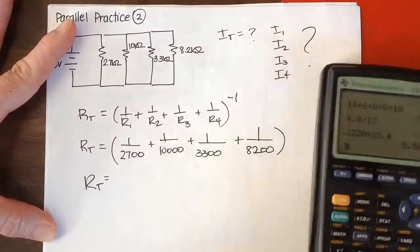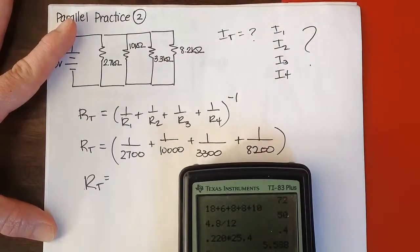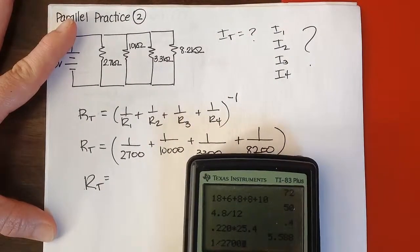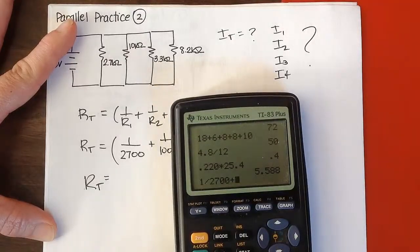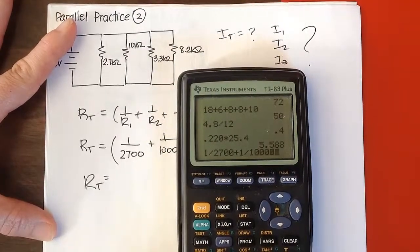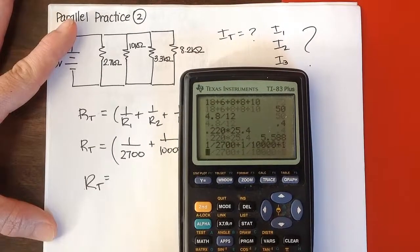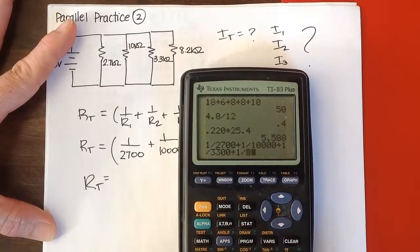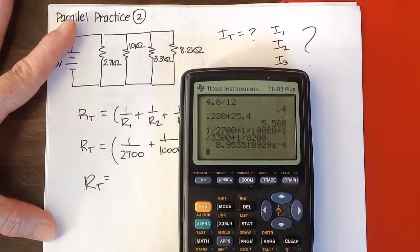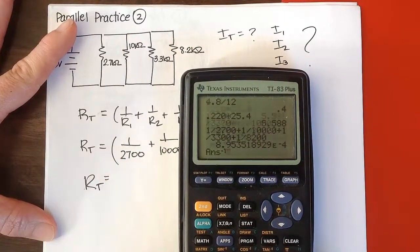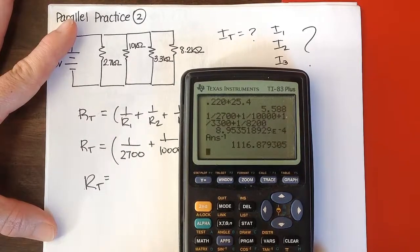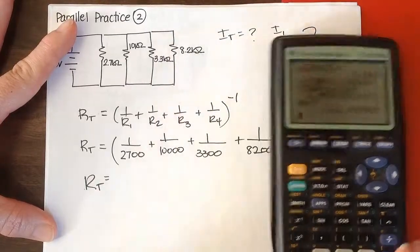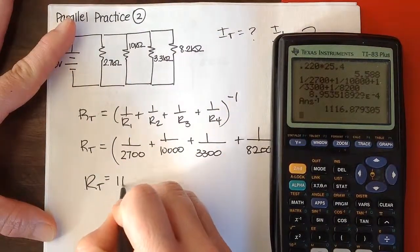So let's find the total resistance now. 1 divided by 2,700, plus 1 divided by 10,000, plus 1 divided by 3,300, plus 1 divided by 8,200, and then the inverse of that. I get 1,116.9 ohms is the equivalent resistance.